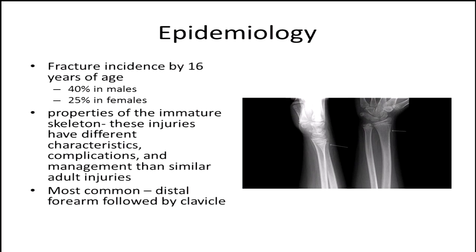One thing that struck me when preparing for this is just how common these fractures are in kids. By the age of 16, 40% of males and 25% of females will have had some type of fracture, which is actually pretty staggering. The properties of the immature skeleton are different — they have different characteristics, different complications, as we just heard in Dr. Kozin's talk. Most commonly these fractures are seen in the distal forearm and wrist, followed second by the clavicle.